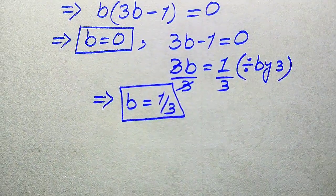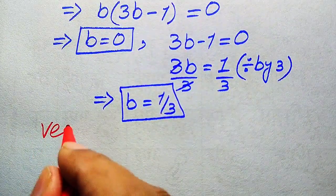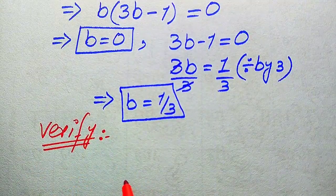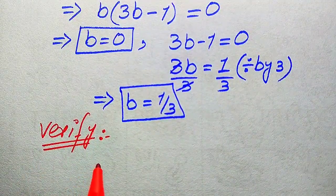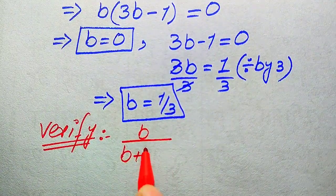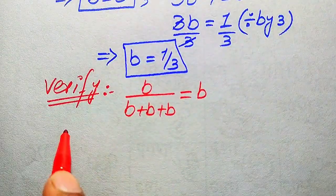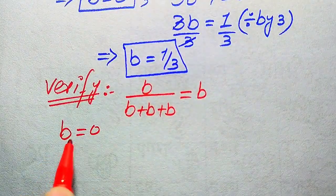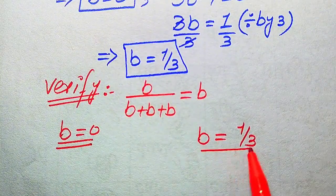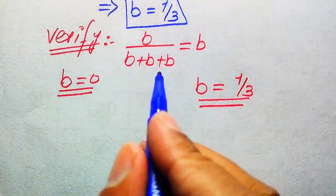From the first method we get two values of b. Now in the next steps we need to verify whether these two values satisfy the given equation or not — in other words, we check whether both values are solutions or extraneous roots. For verification we copy the given equation: b divided by b plus b plus b equals b. On one side we verify b equals zero, and on the other side we verify b equals 1 over 3.